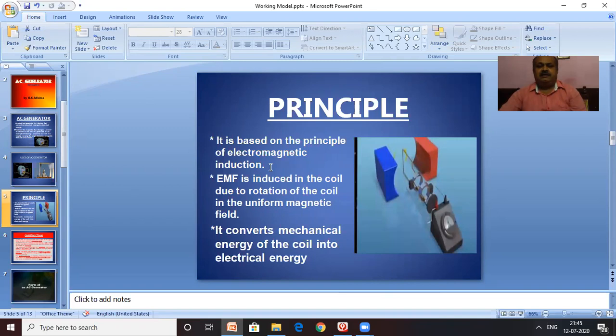We know that EMF is induced in the coil due to change in magnetic flux, and magnetic flux changes by changing strength of magnetic field, area of the coil in the uniform magnetic field, and angle between area vector and magnetic field. So this is an example of the rotation of the coil in the magnetic field which changes the value of the angle between area vector and magnetic field. It converts mechanical energy of the coil into electrical energy.